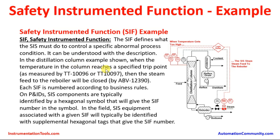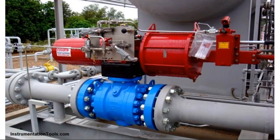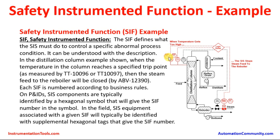In this distillation column example, when the temperature in the column reaches a specified setpoint as measured by TT10096 and TT10097, steam to the reboiler will be closed by ABV12390 — the automated block valve or emergency block valve. Each SIF is numbered according to the business rules. Here we see SIF 1111, so this particular safety instrumented function is numbered SIF 1111. All the sensors and the final control elements share the same SIF number.